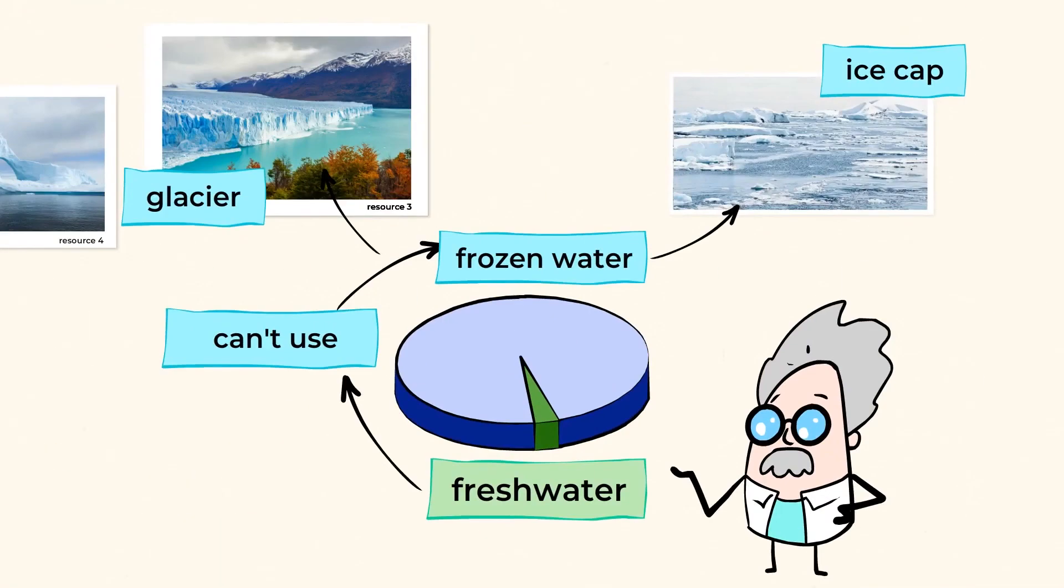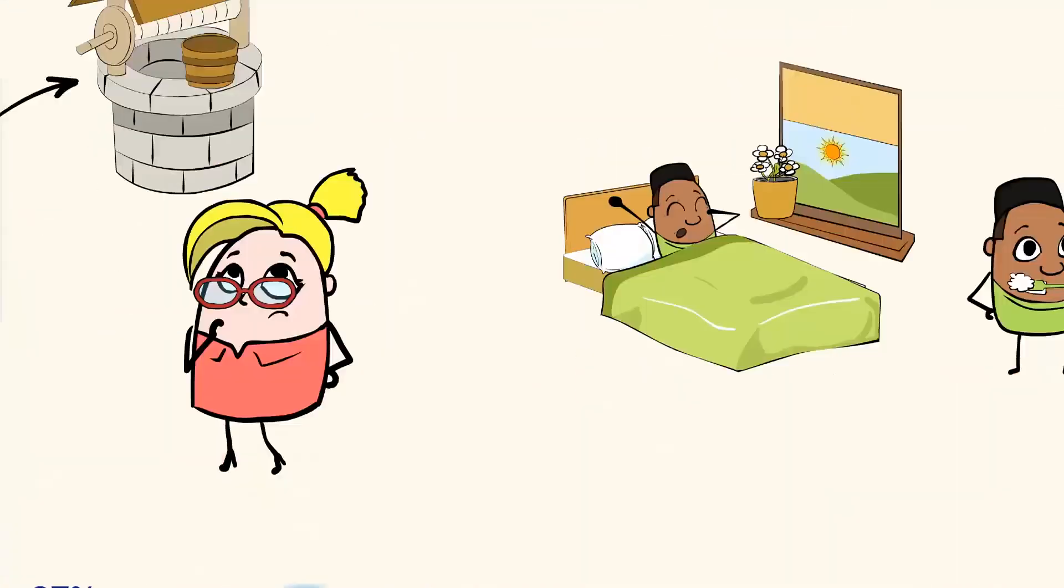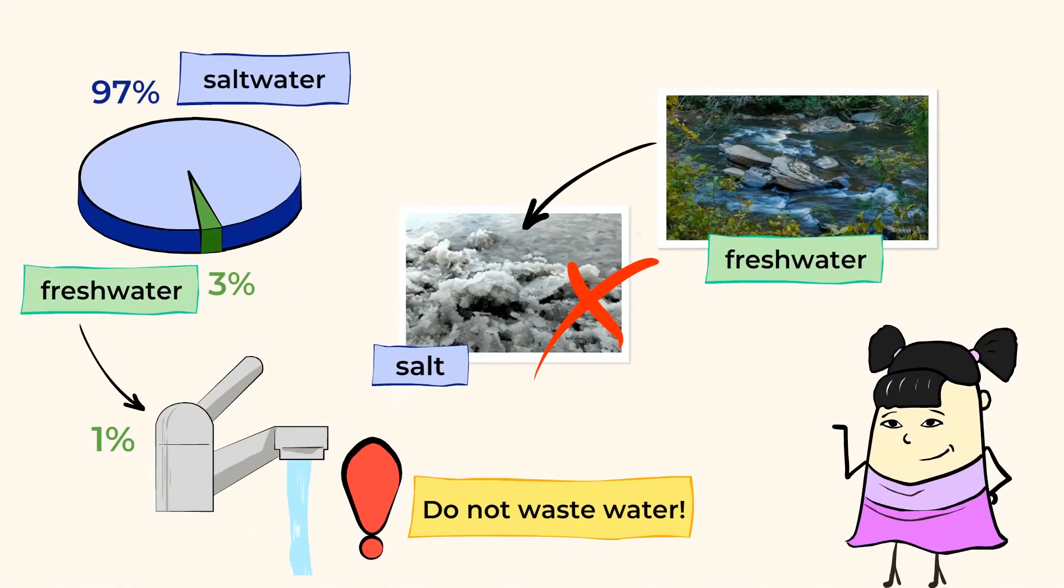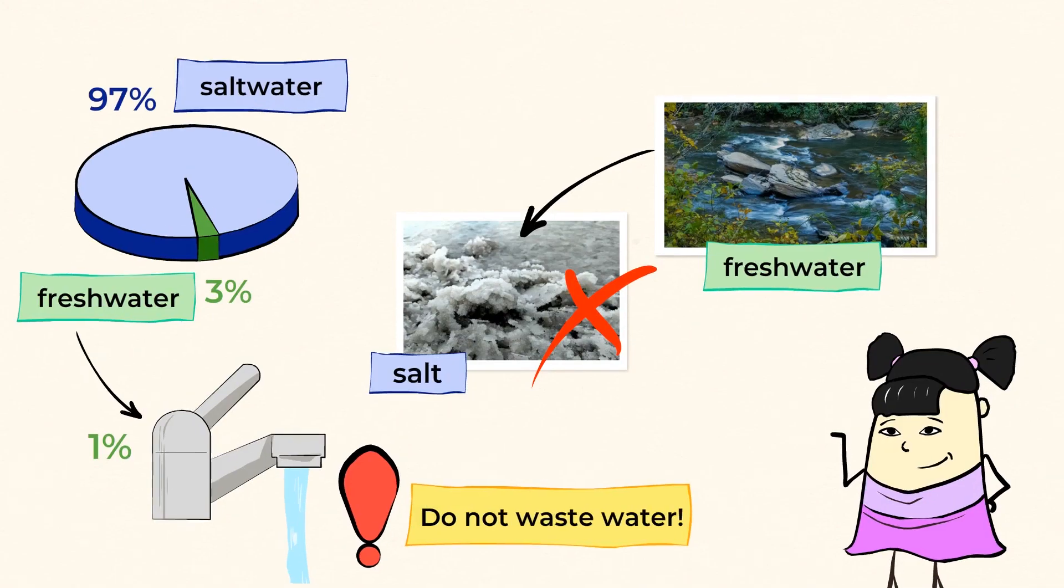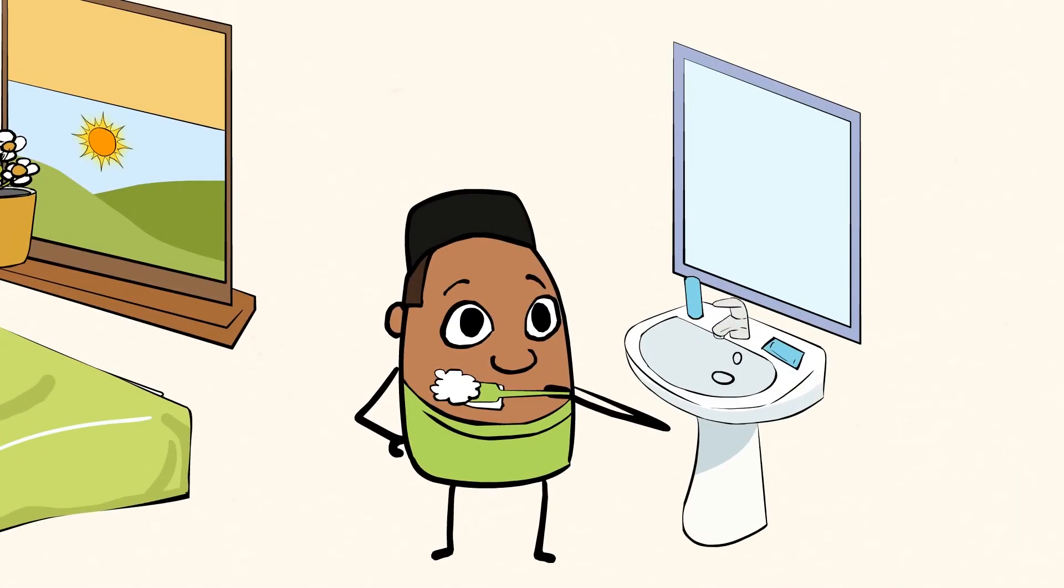The small amount of freshwater that we have access to means that we all need to do our part to conserve it. So turn off the faucet while brushing your teeth, and try to take shorter showers if possible.